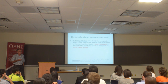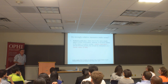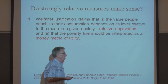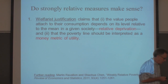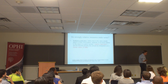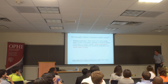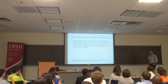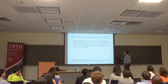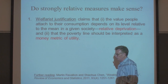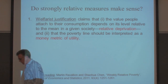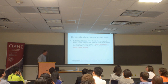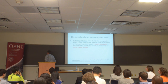Do these strong relative or inequality lines make sense? There's a whole lot of economics we can use to justify absolute poverty lines, going back to the Pareto Principle. What about these strong relative lines — how do we justify them? If you probe into the literature, we see two rationales. The first I'm going to call the welfareist justification. This is an idea that rests on the concept of relative deprivation.